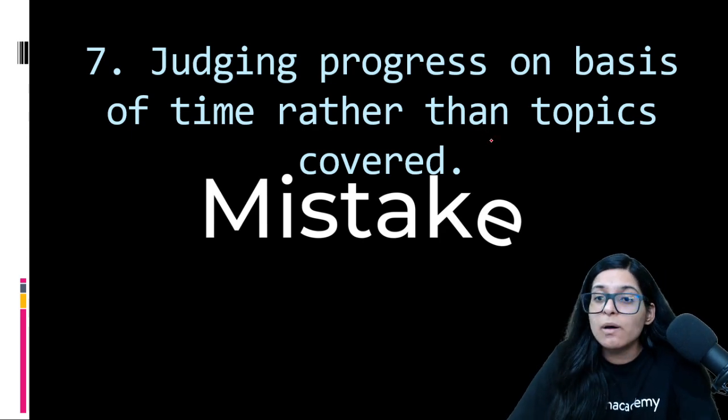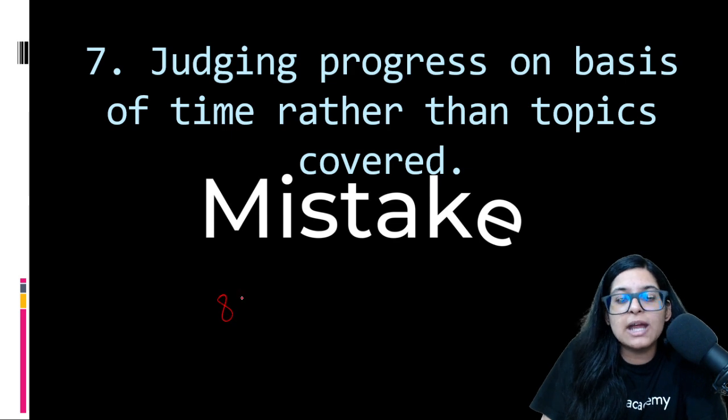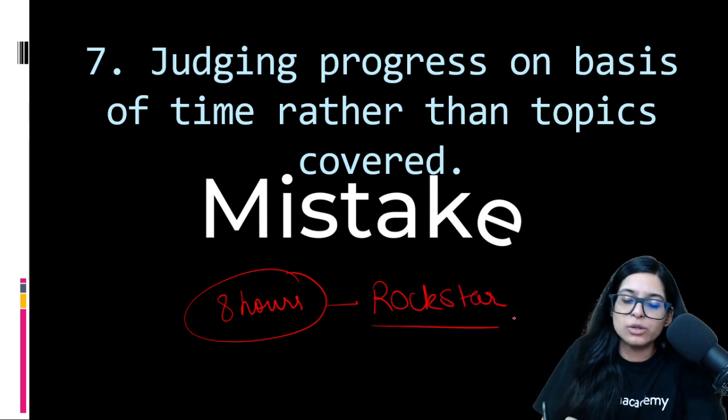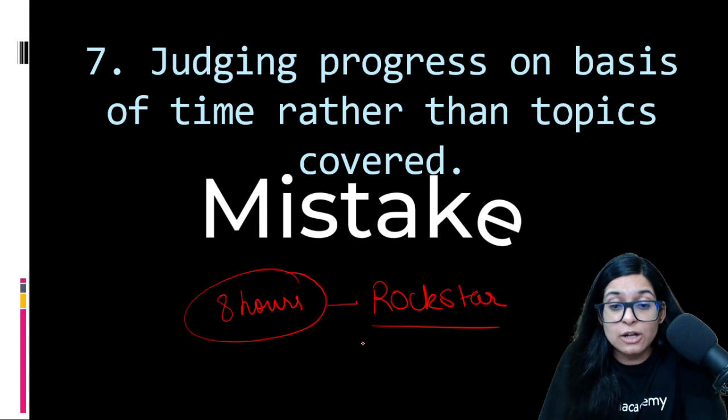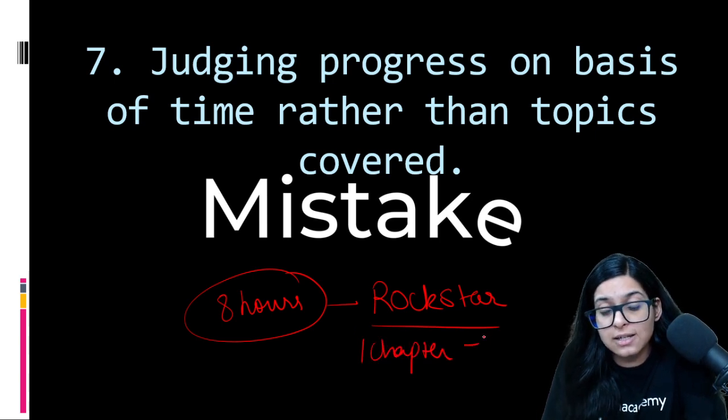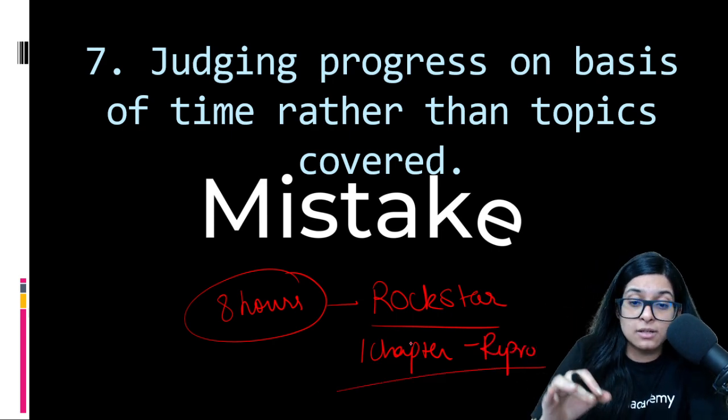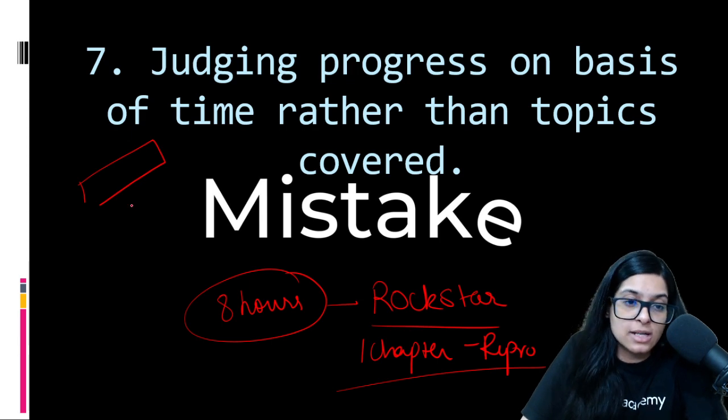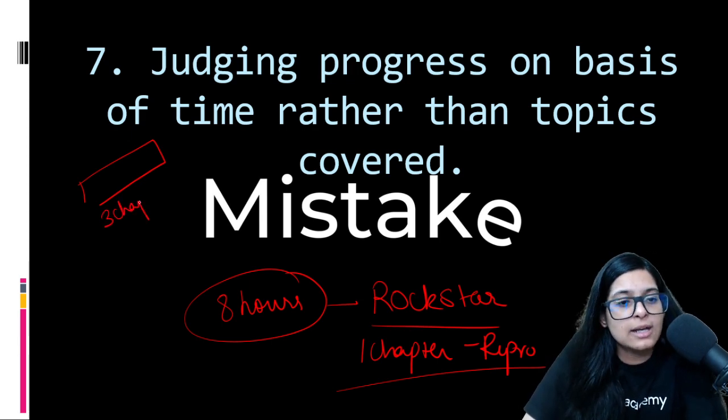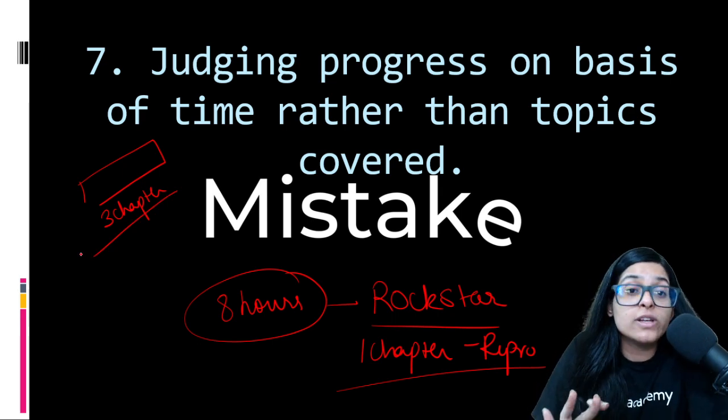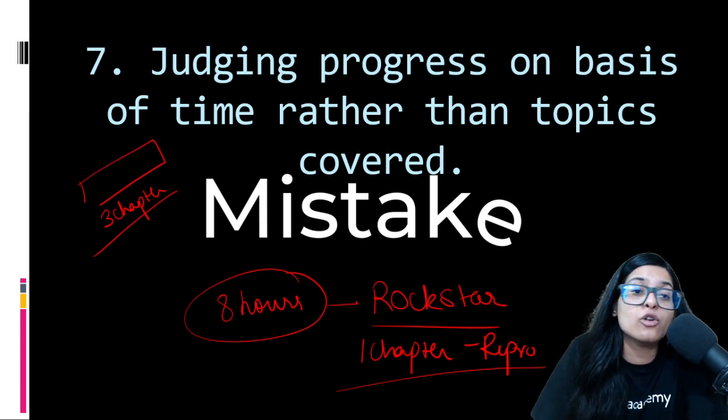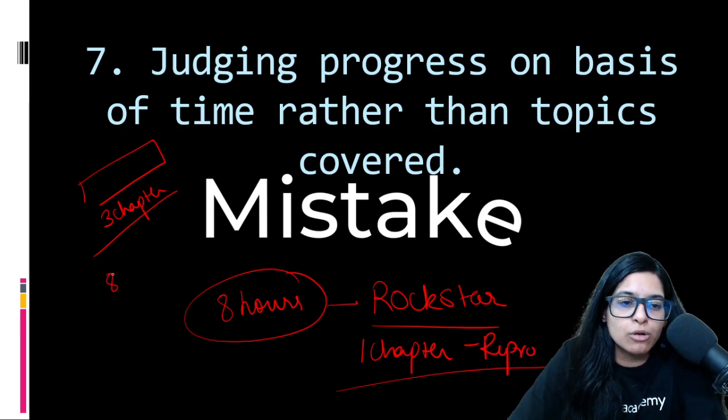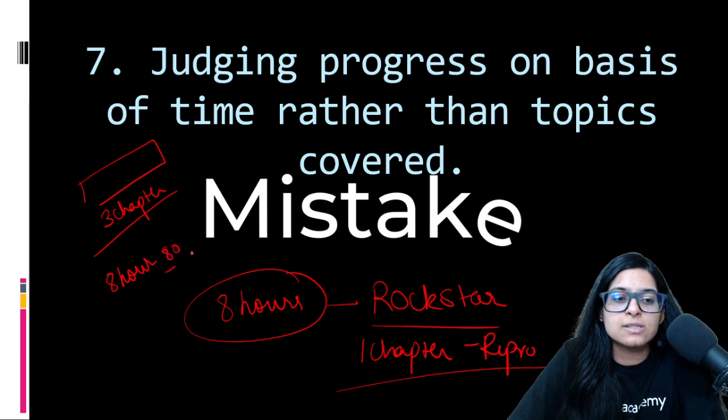Seventh: judging progress on the basis of time rather than the topics covered. There are students who think that today I studied 8 hours, so today I have done great. I'm a rock star. 8 hours is a lot for NEET. But actually what did you study? Actually what did you study? Only 1 chapter, that too some easy one like reproductive health. So never judge your progress by time - that today I studied 8 hours, I studied 10 hours. You should judge by how much content you have covered - that today I studied 3 chapters of biology, 1 chapter of physics. This is great. So you should always judge your progress on the basis of the amount of content you have covered. Don't look at time - that today I studied till 2 AM, so I did something special. How much you studied is important. You sat with the book for 8 hours and solved only 80 questions - this is not acceptable.